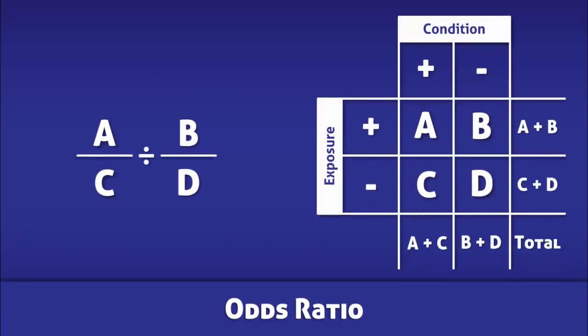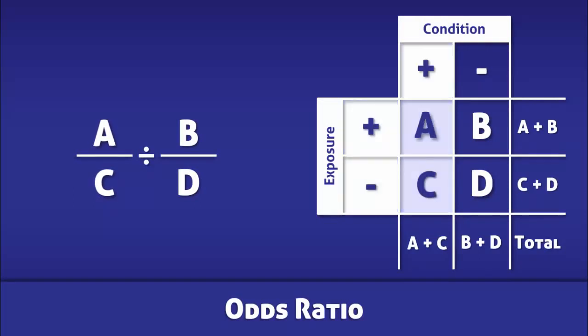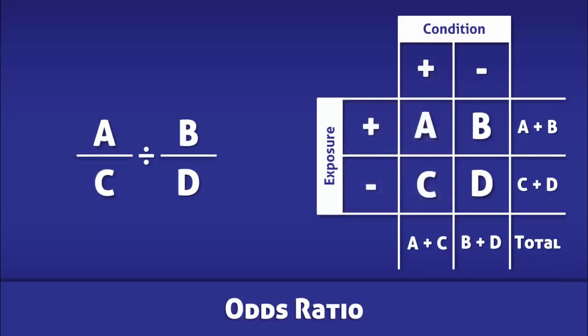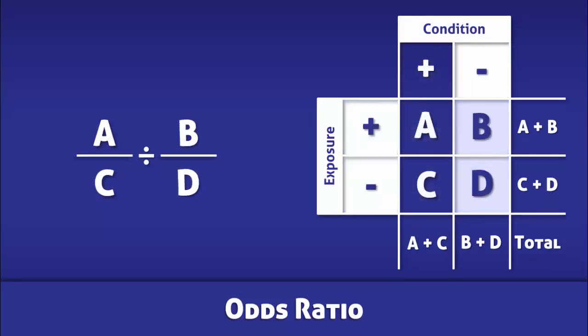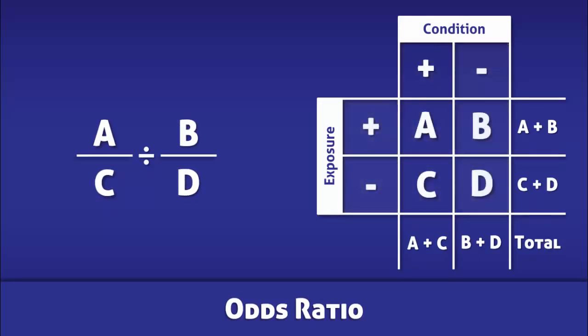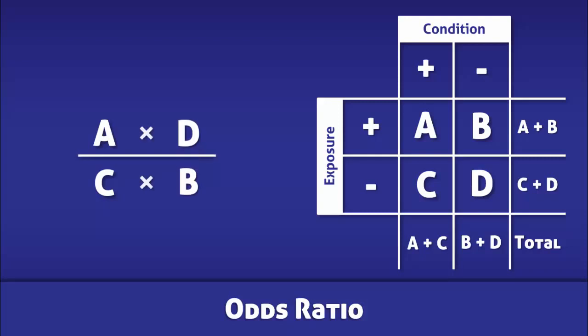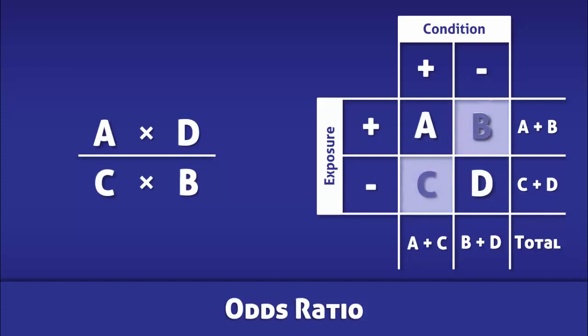Once more, the odds ratio is calculated by dividing the odds of exposure amongst cases by the odds of exposure amongst controls. Alternatively, the odds ratio can be calculated by dividing the product of a times d by the product of c times b.